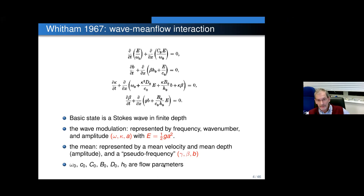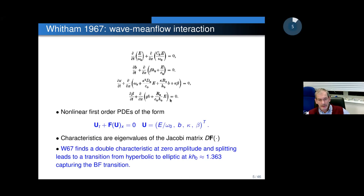In these equations, omega zero, C zero, et cetera are just flow parameters — all familiar, like group velocity and so forth for water waves. There's a very nice tidy closed system, which is in fact just a hyperbolic conservation law — a first order PDE, because it's not always hyperbolic. The characteristics are eigenvalues of the Jacobi matrix. The only analysis Whitham does is to study the characteristics and show there's a double characteristic at zero amplitude, and splitting leads to a transition from hyperbolic to elliptic at the famous kh₀ = 1.363.